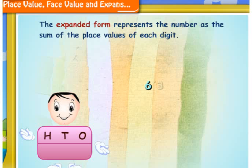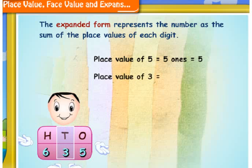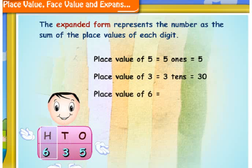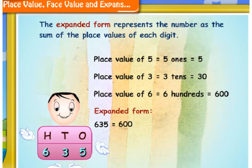Let me take the number 635. I know that the place value of 5 is 5, for 3 it is 30, and for 6 it is 600. Now, the expanded form of 635 is 600 plus 30 plus 5.